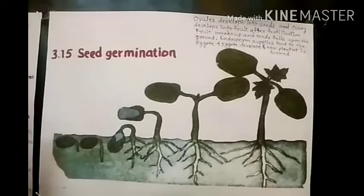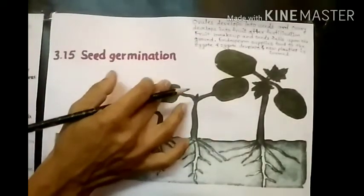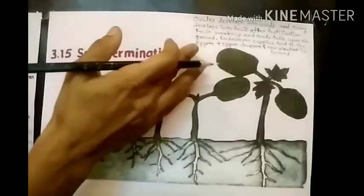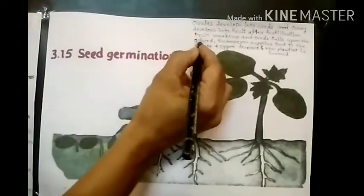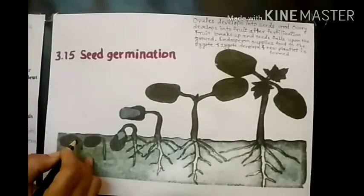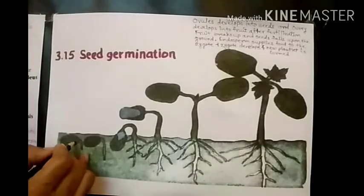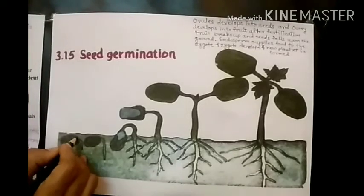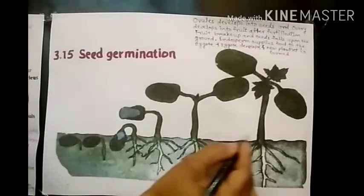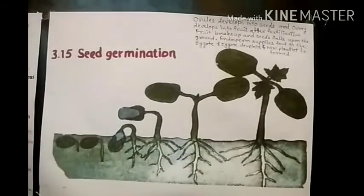Ovules develop into seeds and the ovary develops into fruit after fertilization. The fruit contains seeds. Then the fruit breaks up, seeds scatter and fall upon the ground. The endosperm formed inside the seed gives nutrition to the zygote, and the zygote grows up and a new plantlet is formed. This is the germination of seed, and the process of sexual reproduction in plants is completed.